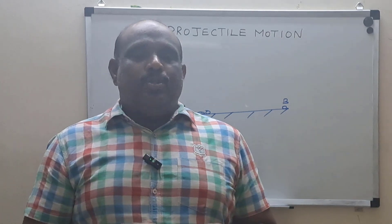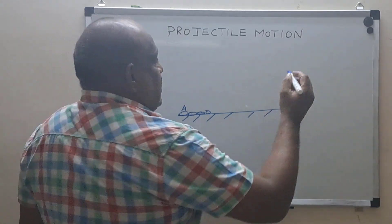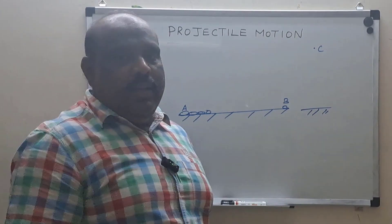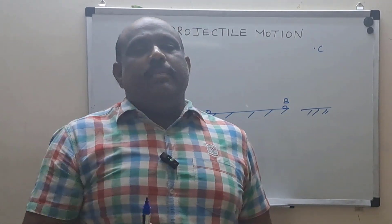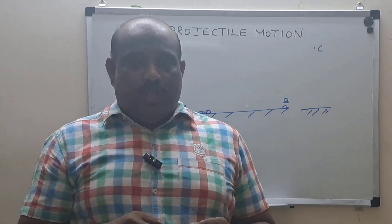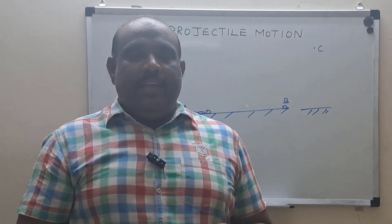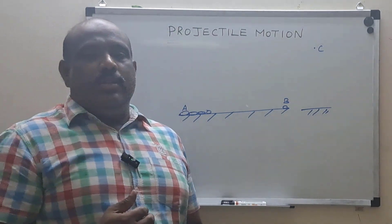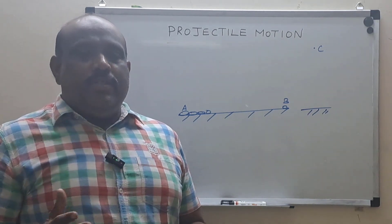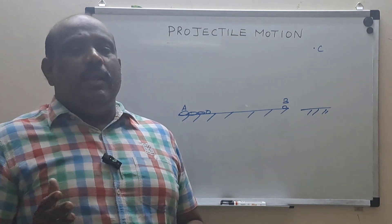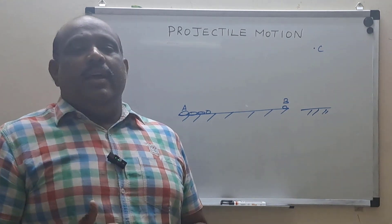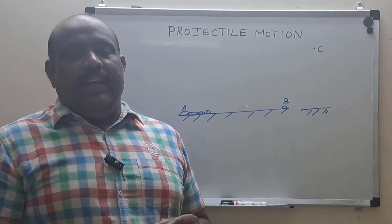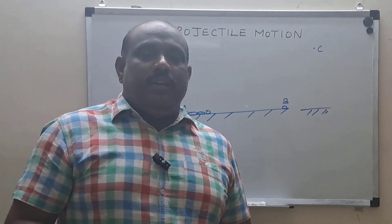We never call this projectile motion because this ball is not influenced by gravity. So we come to two extreme cases. In the first case, I drop a marker at point C — I just leave it — and it comes down. This freely falling body is not projectile motion because it has gravity but no initial velocity. In the second case, two players pass a ball on the ground: the player imparts some velocity at A and the ball goes to B. Here initial velocity is there but it is not attracted by gravity, so this is also not projectile motion.